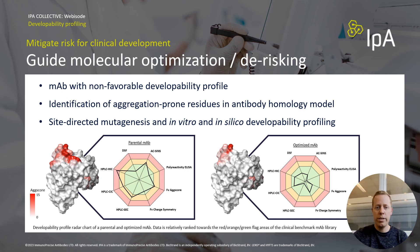Moreover, IPA's developability screening platform is ideally suited to guide the derisking of a lead antibody candidate. In this example, an antibody with a known non-favorable developability profile was subjected to an in silico molecular optimization. Aggregation-prone residues were identified and highlighted, and in silico site-directed mutagenesis was applied to improve the developability profile. Selected engineered leads were recombinantly produced and studied for their drug-like properties. A final optimized lead showed full drug-like properties in various in silico and in vitro assays, while the parental antibody was identified as a poorly behaving molecule from a developability perspective.